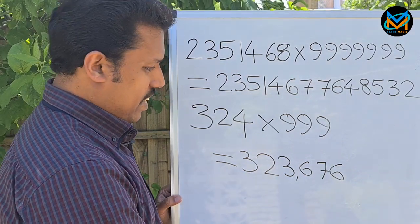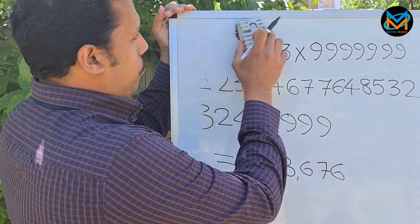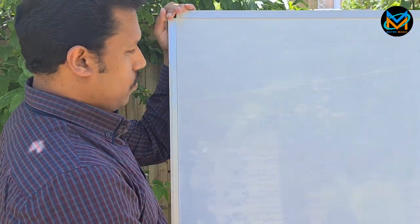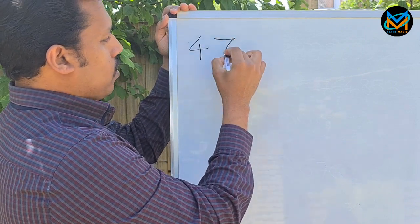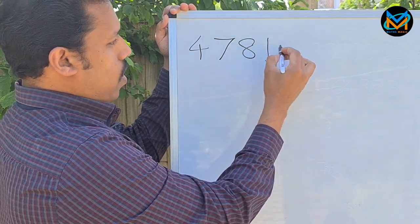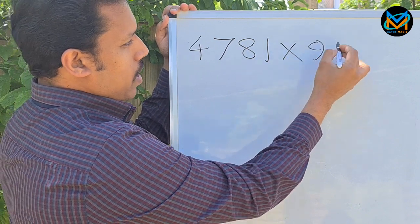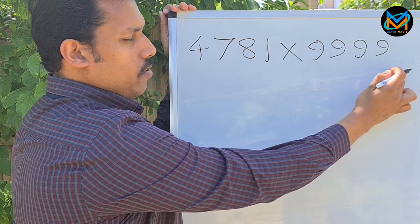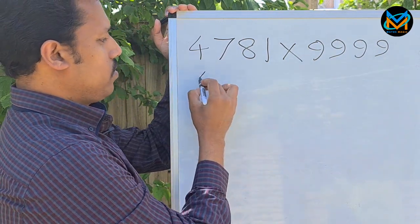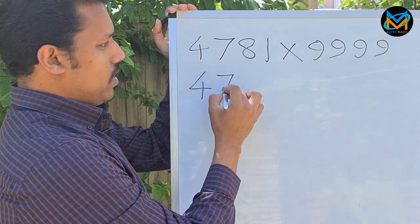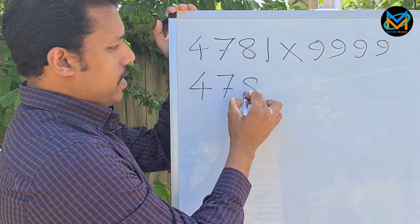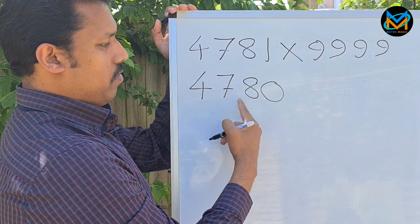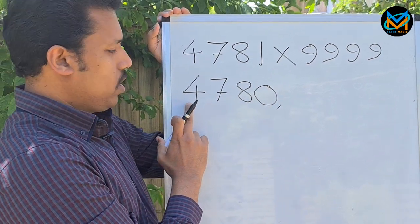Let's see another one. For example, 4781 times 9999 - four digits, four nines. So let's see how we can find this. First, what's the first thing? 4780, just take away one from it. You get 4780. Just put a mark.